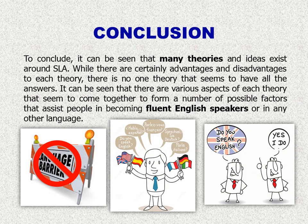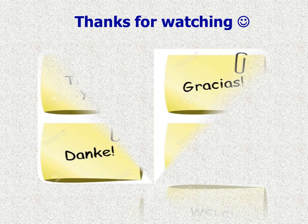To conclude, it can be seen that many theories and ideas exist around second language acquisition. While there are certainly advantages and disadvantages to each theory, there is no one theory that seems to have all the answers. There are various aspects to each theory that come together to form a number of possible factors that assist people in becoming fluent in English or any other language. Thank you very much. Thanks for watching.